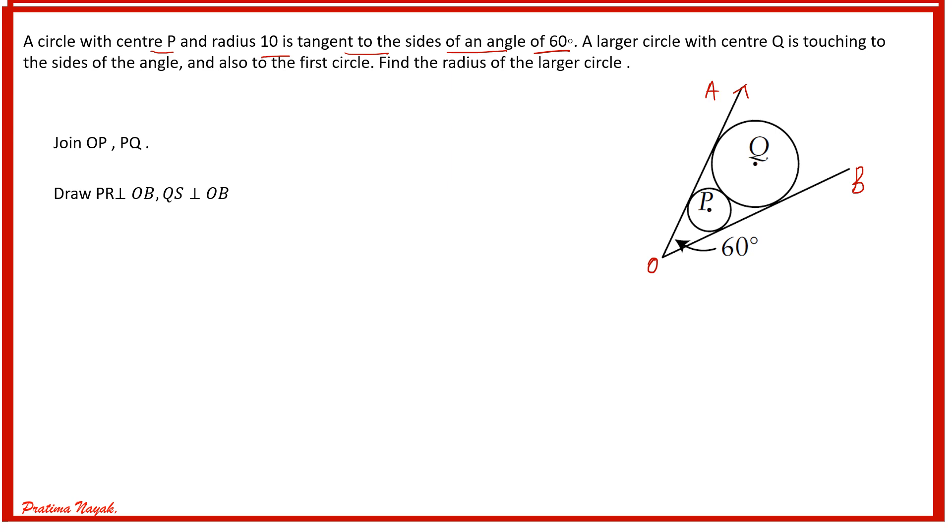Find the radius of the larger circle. This angle is 60 degrees. OA and OP are tangents for circle P as well as Q. If the radius of the smaller circle is 10 units, what is the radius of the larger circle?